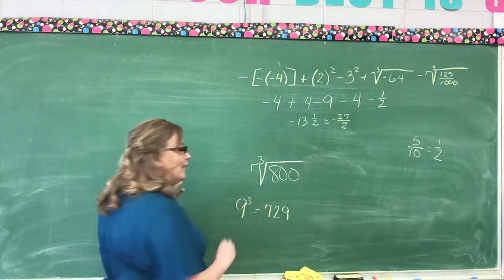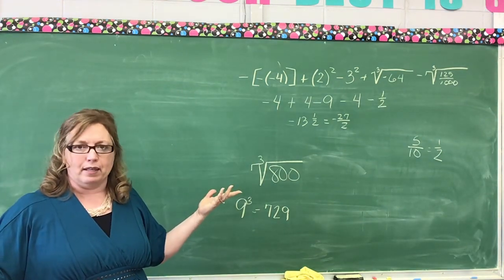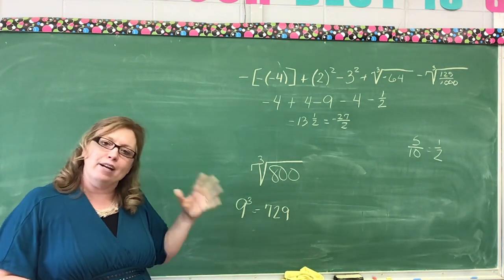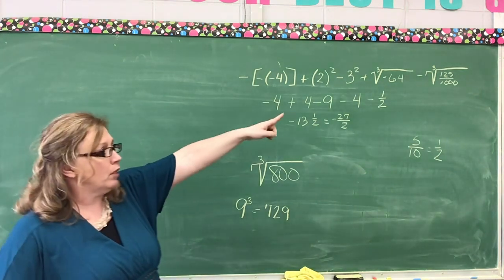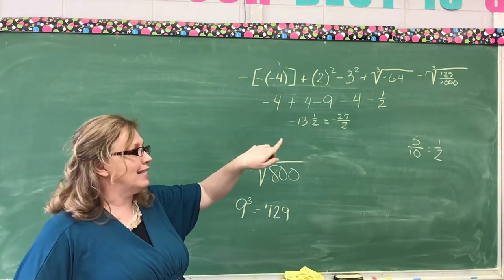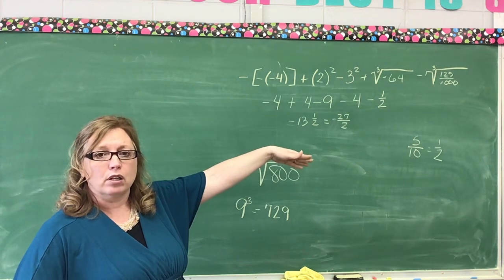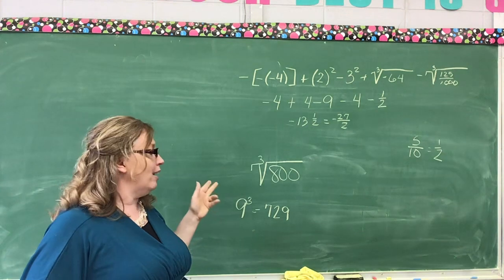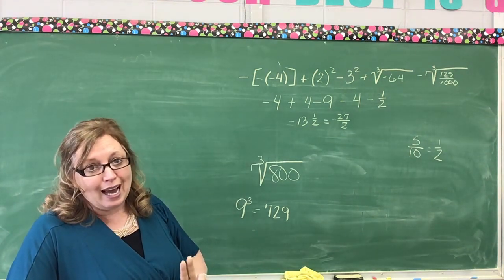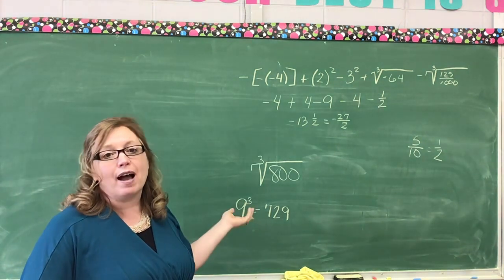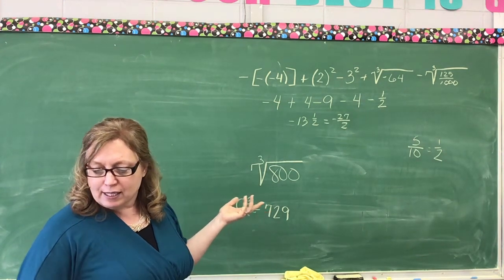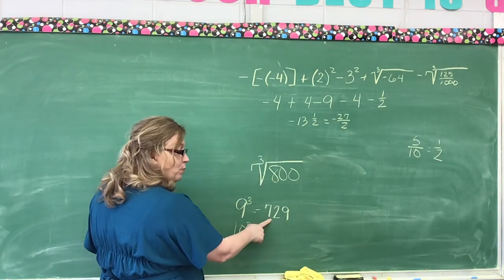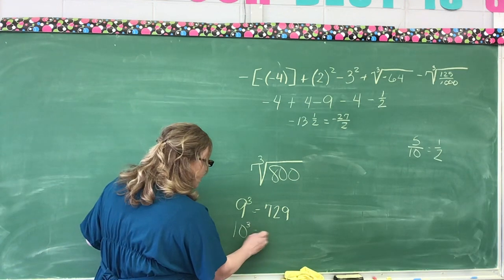81 times 9 is 729. Say, Mrs. Turner, why did you pick 9? Now, I arbitrarily pick the number based on what I already know. I know that 5 cubed is 125. I know that 10 cubed is 1000. So, I know my answer is between 5 and 10. And I know that 800 is a lot closer to 1000 than it is to 125, so I picked 9.